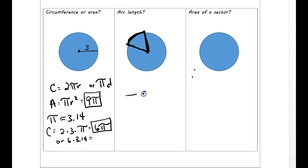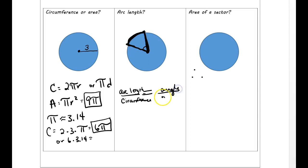When you do the proportion, the idea is that you're doing the arc length over the entire circumference, and you're setting that equal to the angle that's on the inside. If somebody doesn't tell you the angle right here, it's going to be really hard to find the arc length. It's going to be the angle over 360. This is a proportion — part over whole, part over whole. Part of the outside over the total outside, and then part of the angle over the entire circle's angle, which is 360.